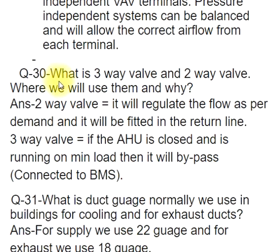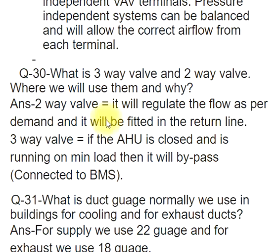Q30: What is a 3-way valve and 2-way valve? Where and why do we use them? ANS: 2-way valve regulates the flow as per demand and is fitted in the return line. 3-way valve: if the AHU is closed and is running on minimum load then it will bypass; connected to BMS.